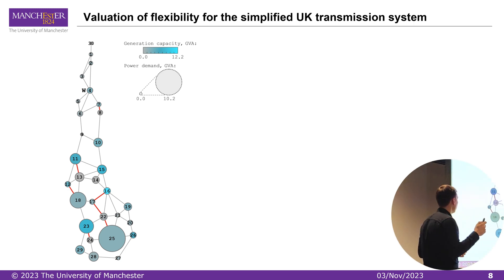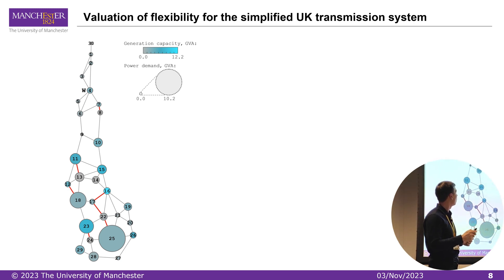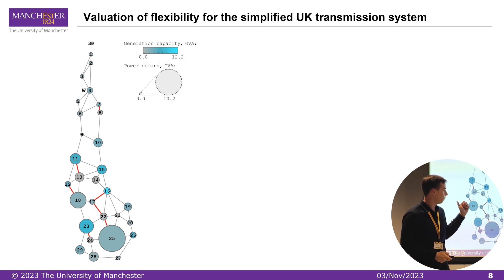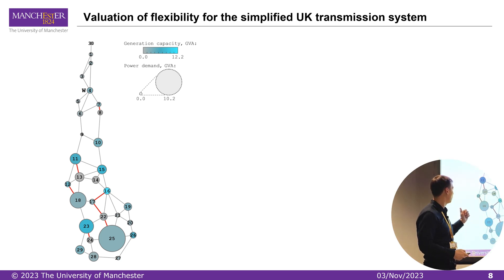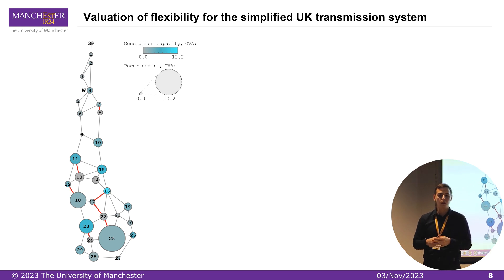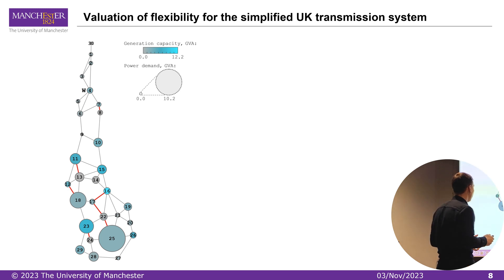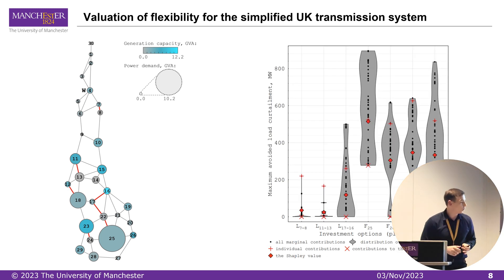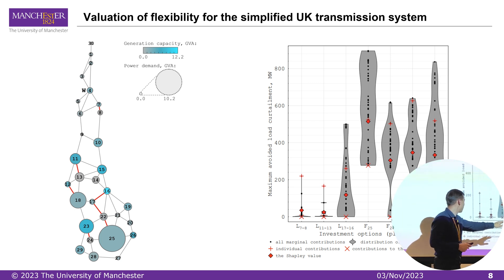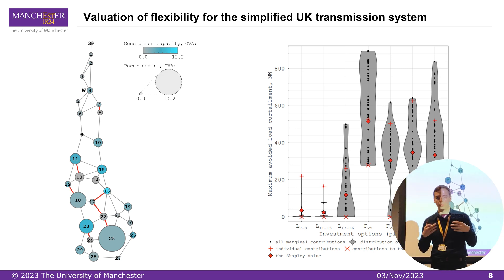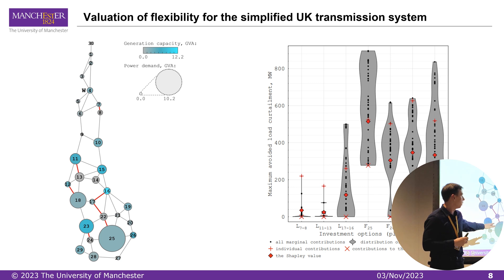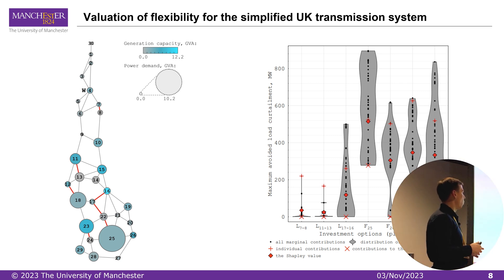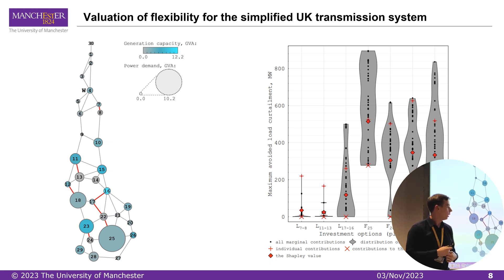We then repeated the simulations for the UK transmission system — a simplified representation with 30 substations. In this graph, the size of nodes corresponds to the load located in the system, showing that more load is located in the south. We selected seven of the most impactful investment options for the coalitional analysis. It becomes very clear that four flexibility providers located in the south of the UK are very useful, leading to significant load curtailment reductions. One transmission line in the south is also quite useful and can be recommended for prioritization.